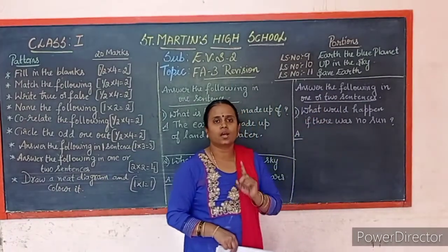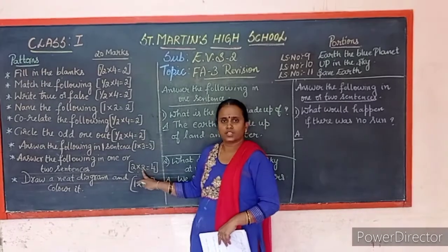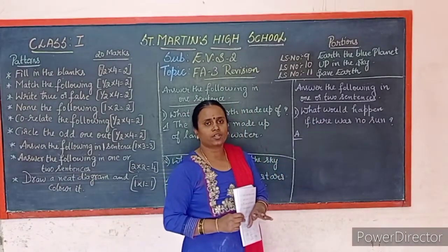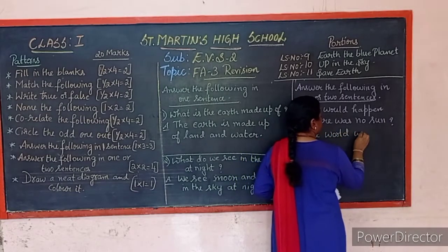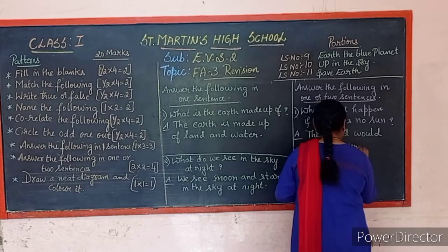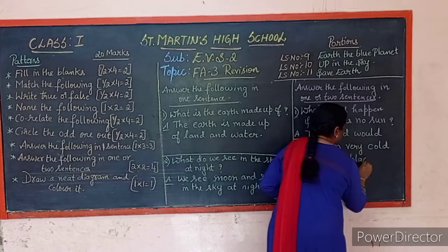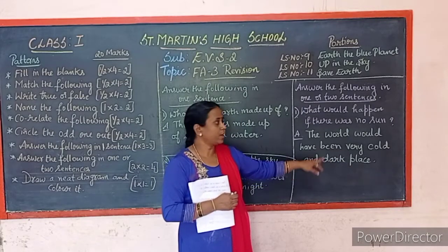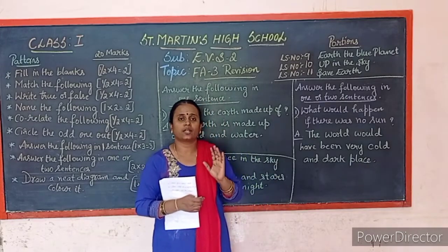Answer the following in one or two sentences: 'What would happen if there was no sun?' — The world would have been a very cold and dark place. By seeing the questions, you have to write the answers correctly, children.